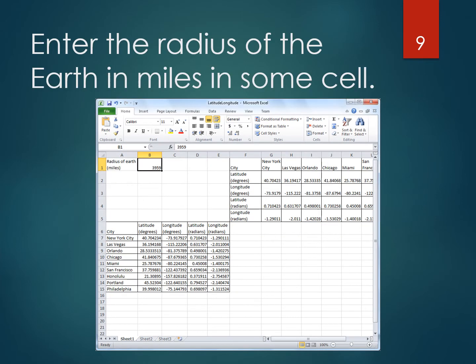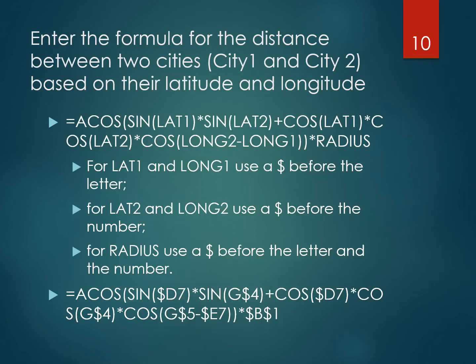This calculation depends on the radius of the Earth; I am entering the radius in miles in cell B1. Now it comes time to calculate the distance between two cities. One city will be drawn from the original city data and the other from the transposed city data, based on latitude 1, longitude 1, latitude 2, and longitude 2.